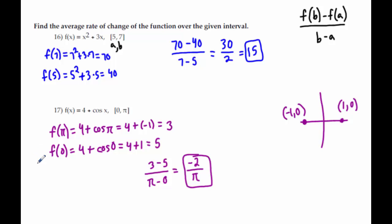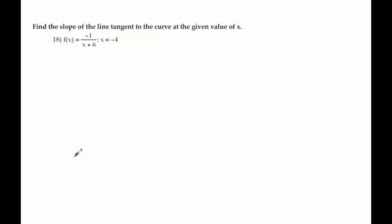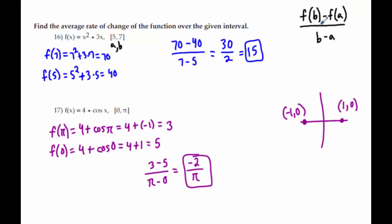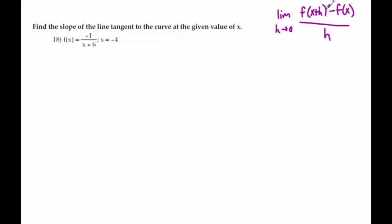The last page is what we did on Friday. These three questions all require us to use the formula: the limit as h approaches zero of f of x plus h minus f of x, all over h. There are two formulas we need to memorize — one is f of b minus f of a over b minus a, and the other is this limit definition formula. I need you to memorize it so you can use it on the test. To find the slope of the line tangent to the curve at x equals negative 4, I'm going to plug in negative 4 for x as my first step.